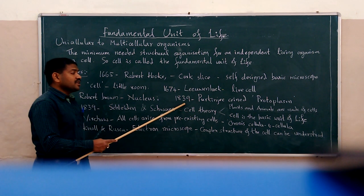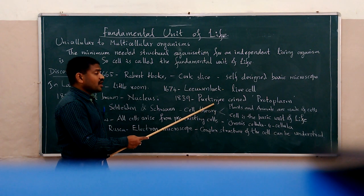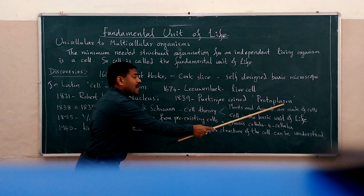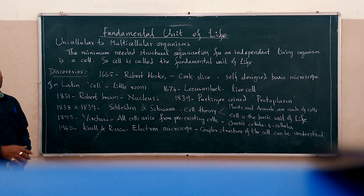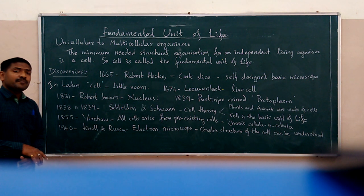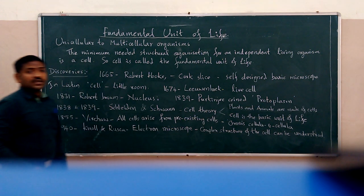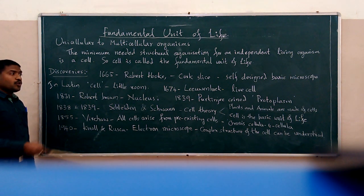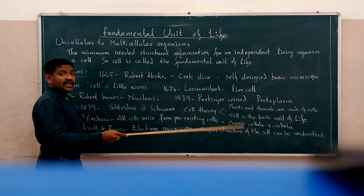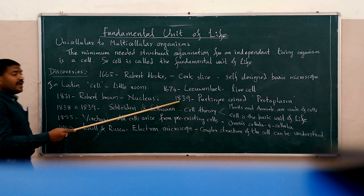In 1839, another scientist called Purkinje coined the term 'protoplasm'. Protoplasm is the fluid-like structure present inside the cell. Purkinje gave this term to the fluid-like structure found inside the cell.